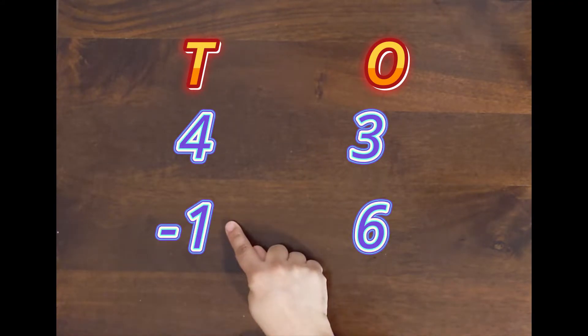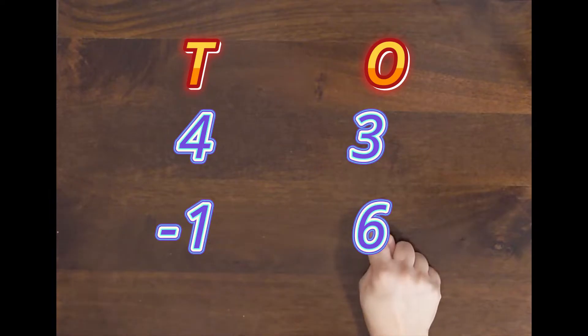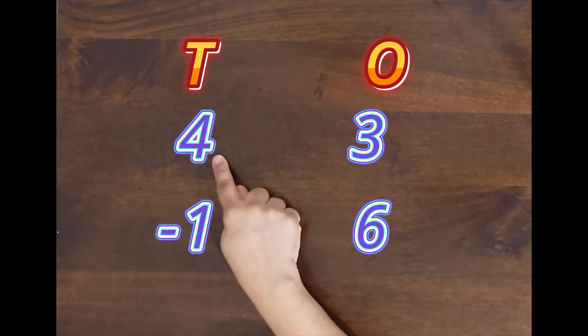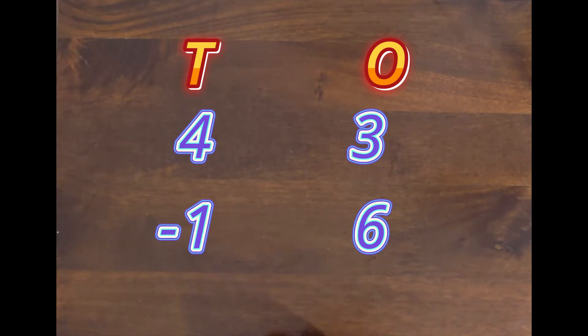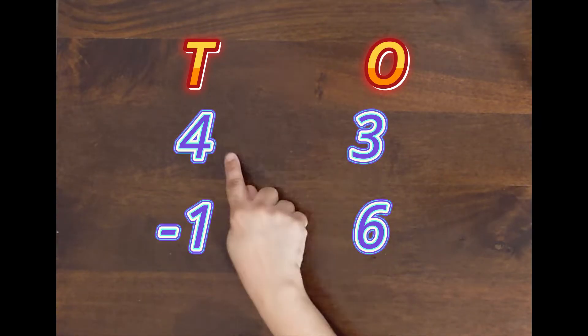Now we can't do 3 minus 6, so we have to take carry from 4. But how to do that? Let's try to understand with a very basic example. 43 means 4 tens and 3 ones.